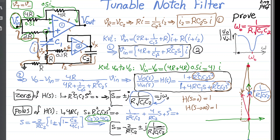This confirms that the magnitude of the transfer function is: gain of 1 at DC, gain of 1 at super-high frequency, and gain of 0 at omega naught — exactly as shown in the magnitude response plot.